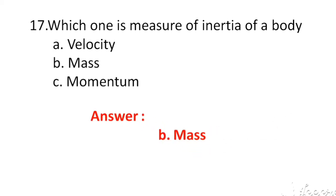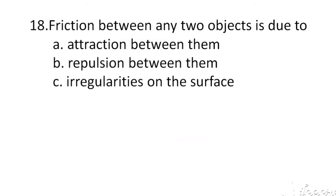Friction between any two objects is due to. The options are A. Attraction between them, B. Repulsion between them, C. Irregularities on the surface. The right answer is C. Irregularities on the surface.